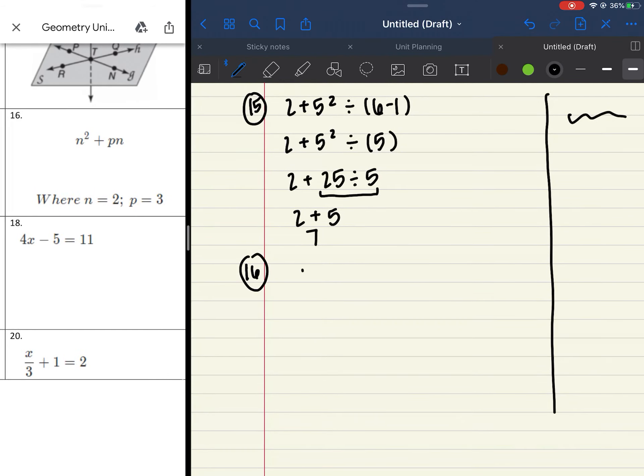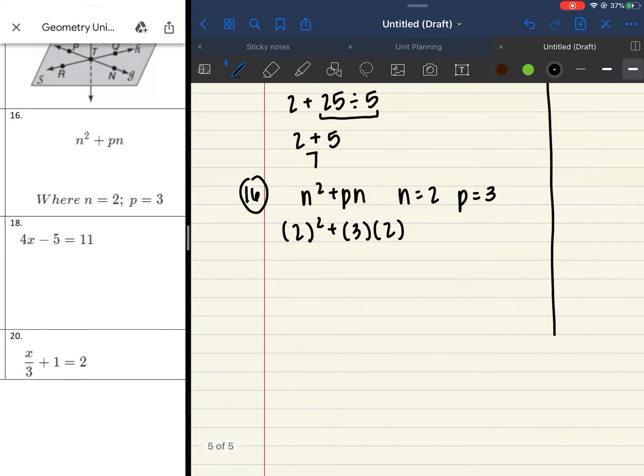Number 16, I have n squared plus pn, where n is equal to 2 and p is equal to 3. So we plug in our numbers, 2 squared plus 3 times 2. Now we do our PIMDAS. I have no parentheses. I do have an exponent, though. 2 squared is 4 plus 3 times 2 is 6. And your last answer should be 10.